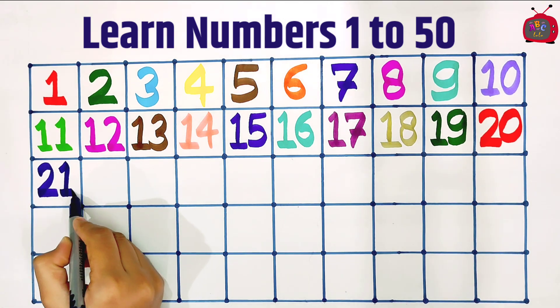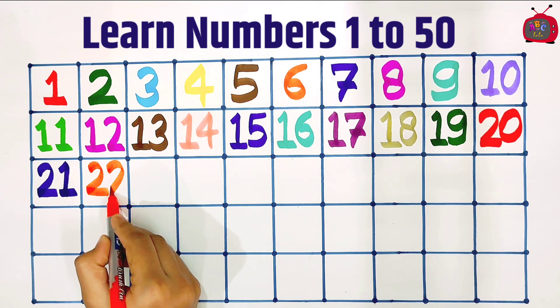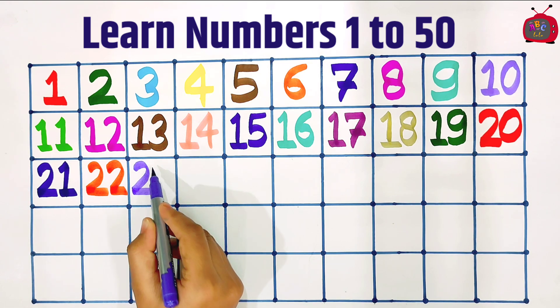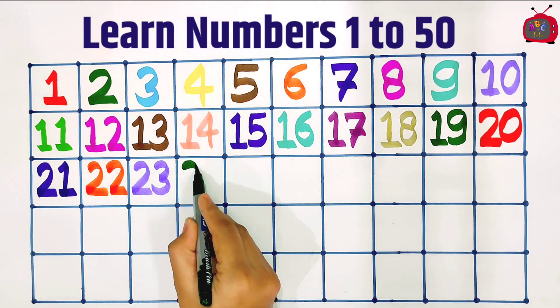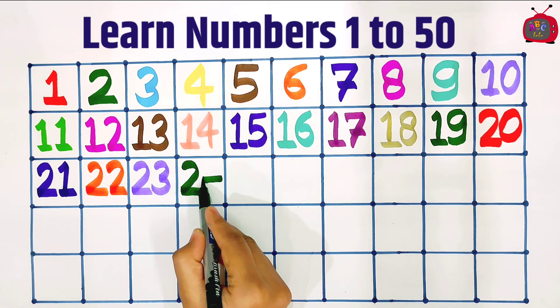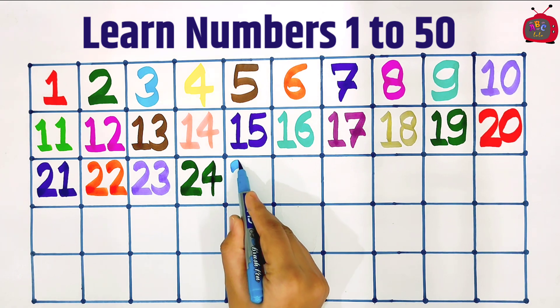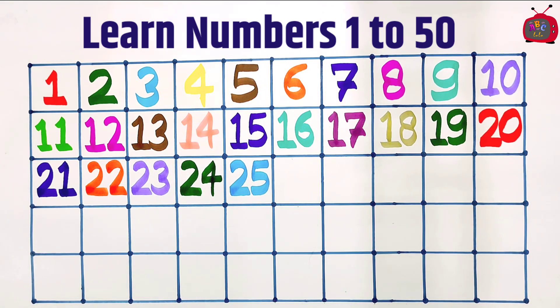Two, one: twenty-one. Two, two: twenty-two. Two, three: twenty-three. Two, four: twenty-four. Two, five: twenty-five.